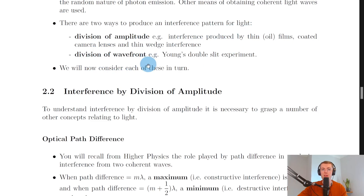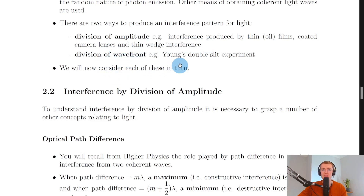There are two ways to produce an interference pattern for light: division of amplitude and division of wavefront. Division of amplitude involves thin oil films, anti-reflective coatings on camera lenses, and thin wedge interference. An example of division of wavefront is Young's double slit experiment. We will now consider each of these in turn, looking at division of amplitude and its applications, and Young's double slit experiment. Thanks for watching — make sure to give the video a thumbs up and subscribe.